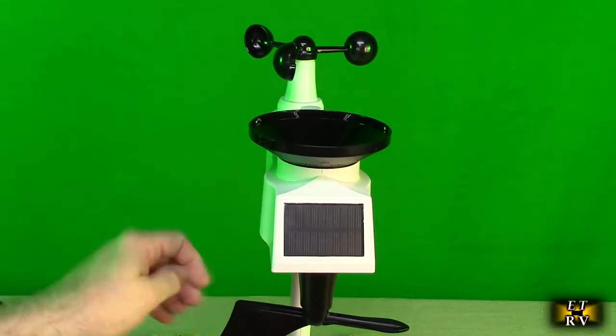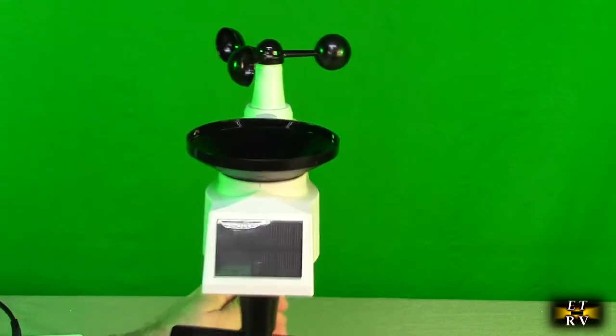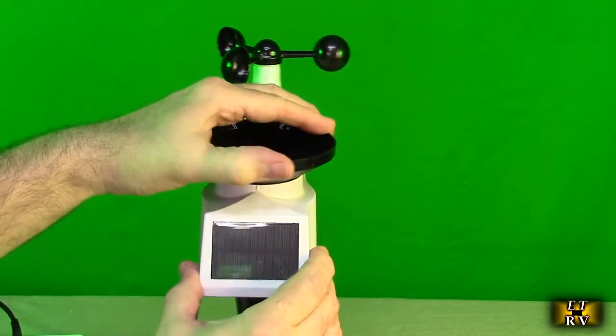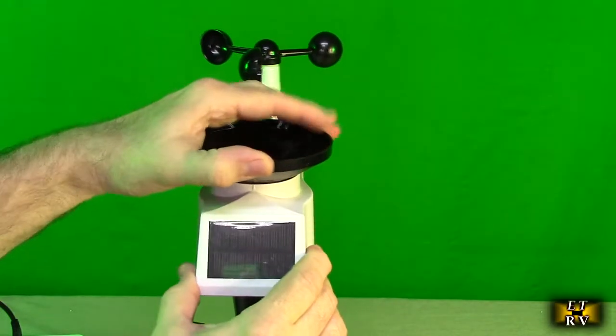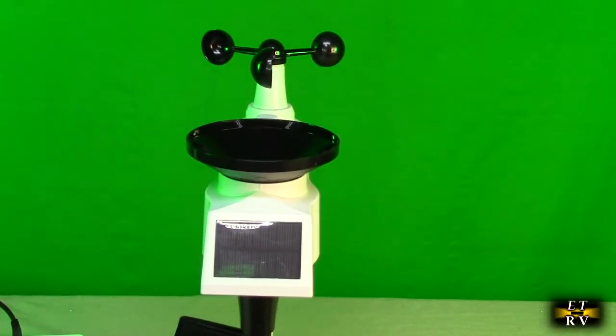Now this rain gauge is simple to clean. You just rotate it counterclockwise and it comes off just like that in case you get leaves and debris in there. But it'll take a lot to clog it up.